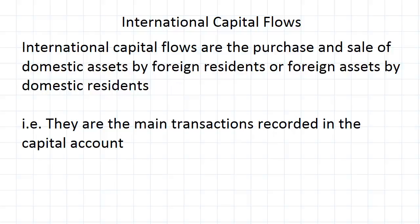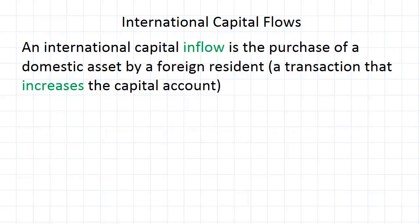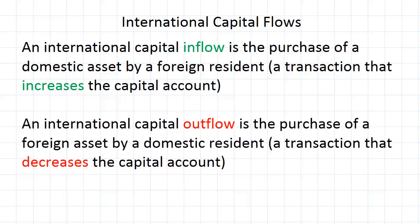We've got specific types of international capital flows. International capital inflows involve the purchase of a domestic asset by a foreign resident. We define this as an inflow specifically because it involves money coming in, and so it increases the capital account. Then we've got international capital outflows — the purchases of foreign assets by domestic residents, called outflows because money is flowing out of the domestic economy, which decreases the capital account.